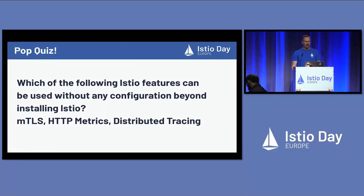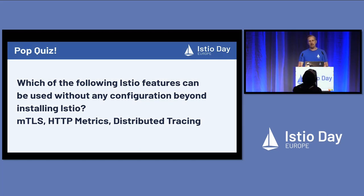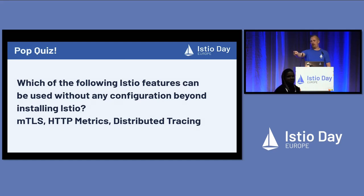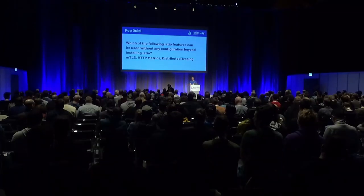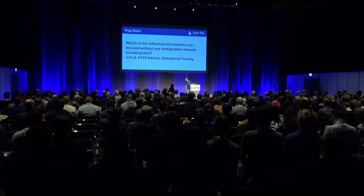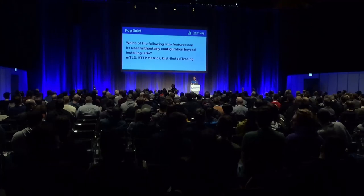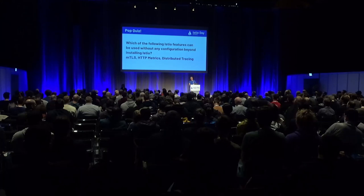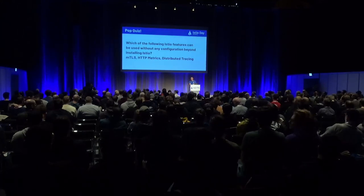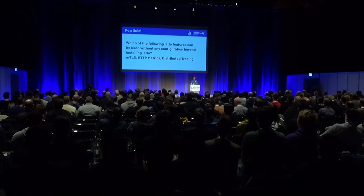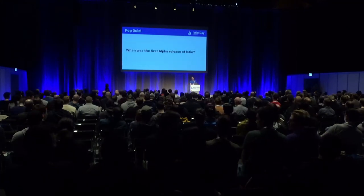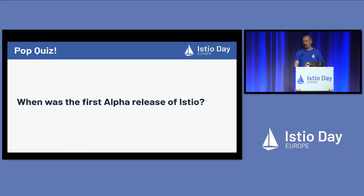We've got three Istio features listed here. Which of them can be used without any configuration beyond installing Istio: MTLS, HTTP metrics, or distributed tracing? Choose all that apply. The answer — MTLS and HTTP metrics. Distributed tracing does require header propagation, so there's a little bit of configuration needed to take advantage of that.